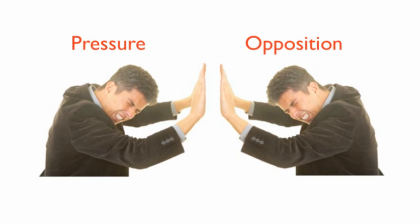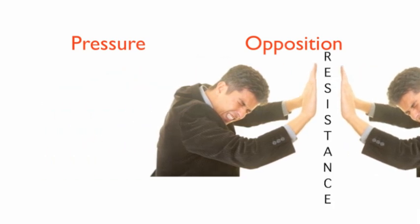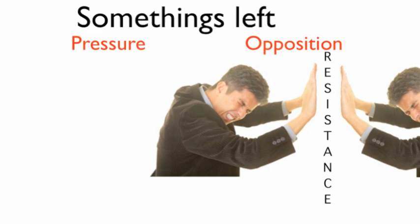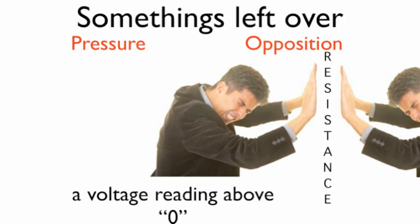Remember our picture of pressure overcoming the opposition? If that pressure does not fully overcome the opposition, something's left over. There's resistance in the circuit somewhere because we did not drop all of the voltage. We have a reading above zero because there's resistance in the circuit.